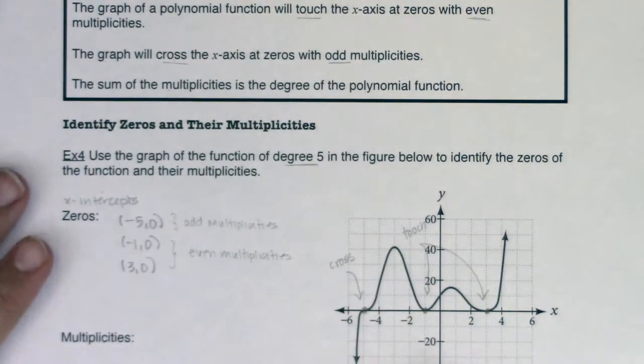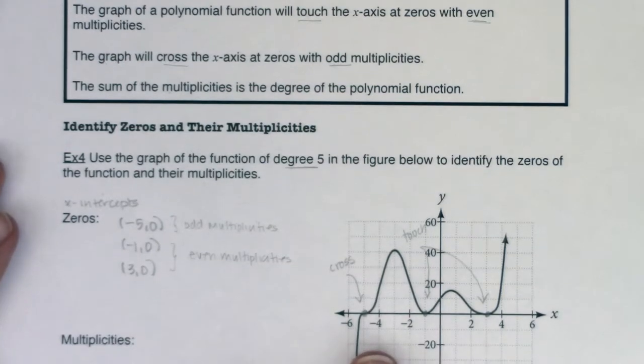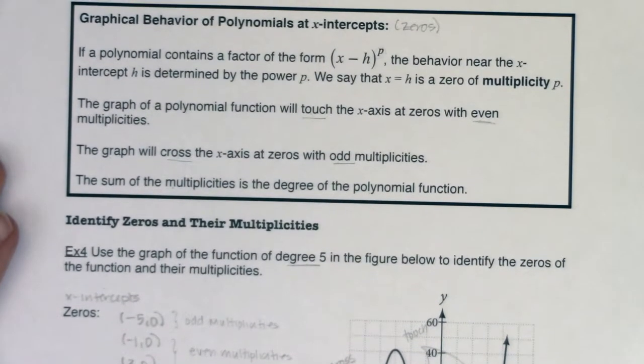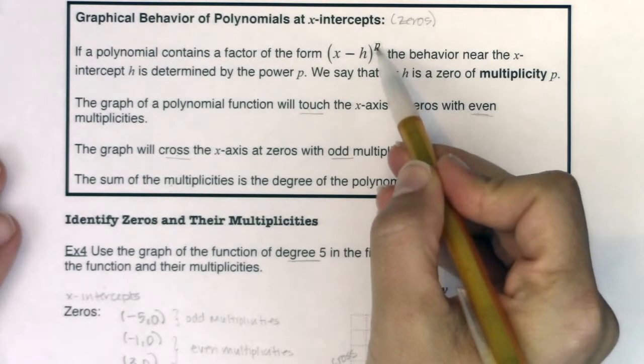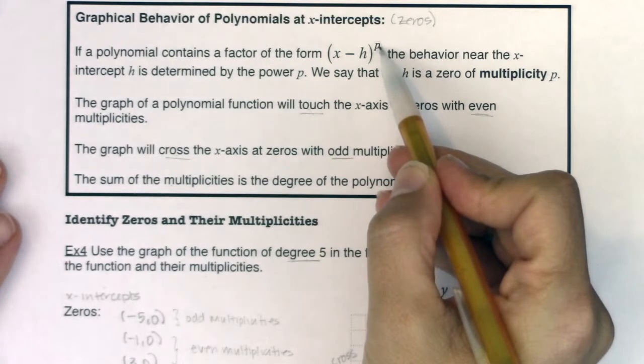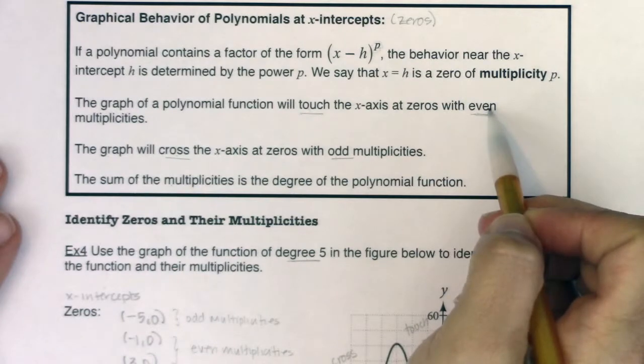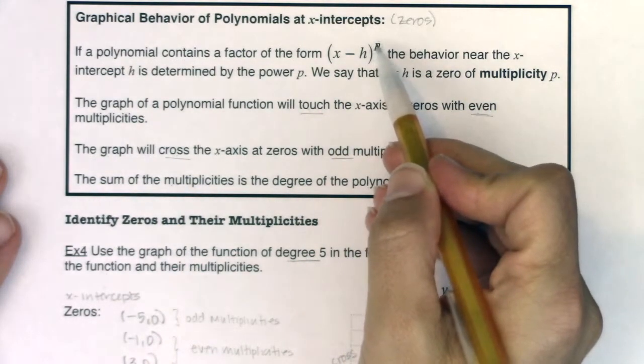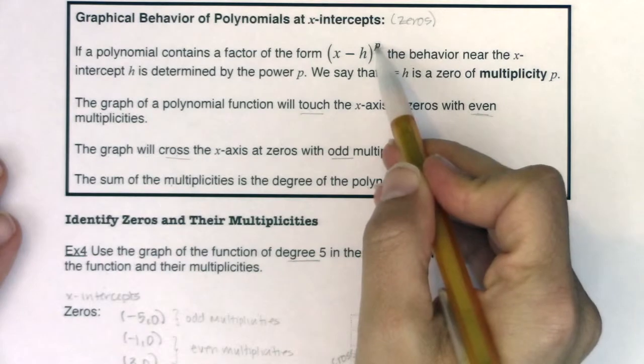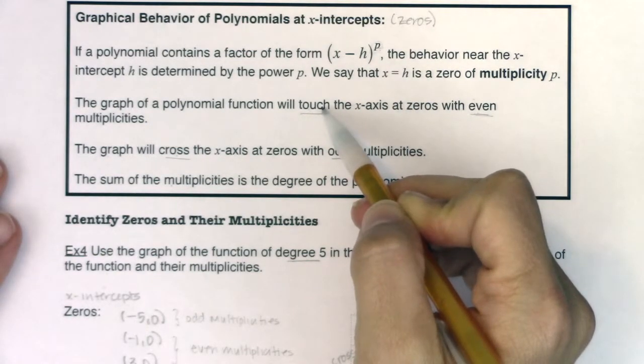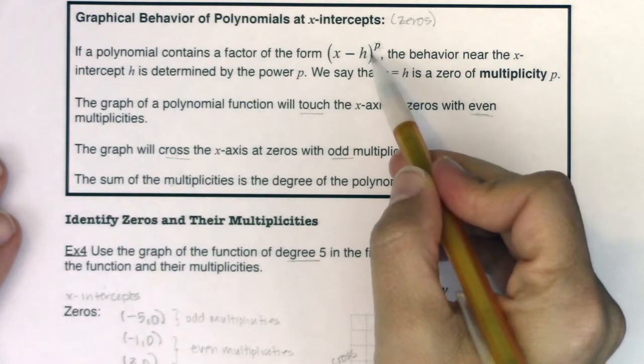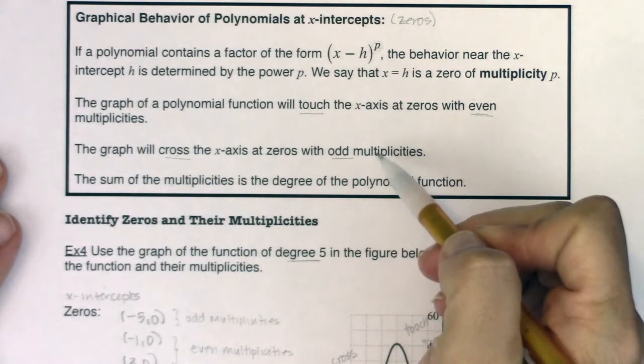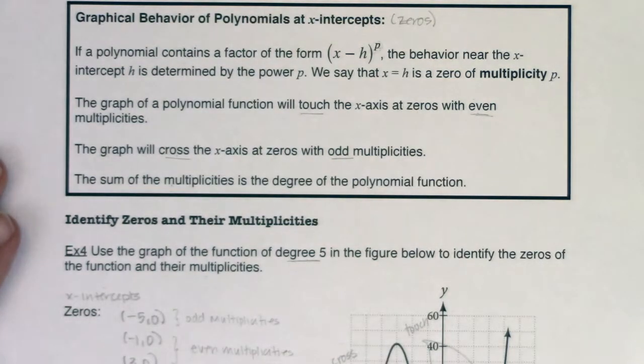And just to remind you what I mean when I say multiplicity. When you have an even or an odd multiplicity, it means the power that's associated with your factor is either an even or an odd number. Even powers, the graph will touch the x-axis at that zero. If you have an odd power or an odd multiplicity, the graph will cross the x-axis at that zero.